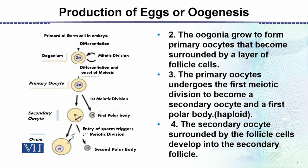The second stage: the oogonia grow to form primary oocytes that become surrounded by a layer of follicle cells. As egg formation begins, these cells become surrounded by what we call follicle cells. This diagram shows the steps right from the primordial germ cell up to ovum formation — that is the primordial germ cell in the embryo, in the female ovary during the fetal condition, where it begins to differentiate.